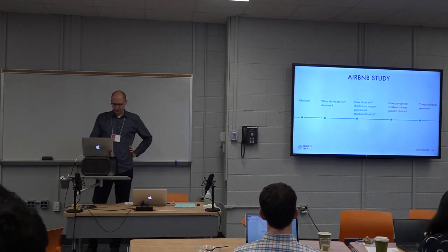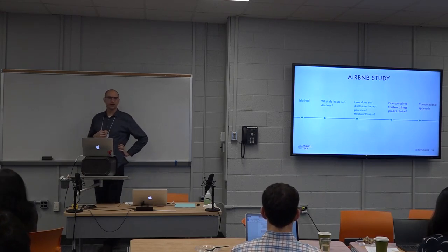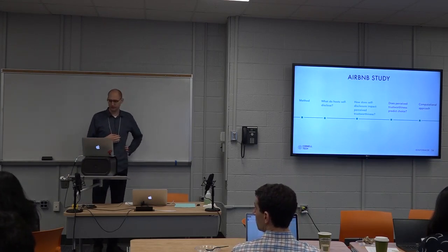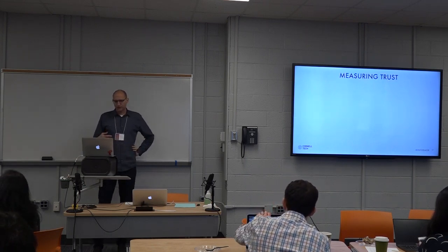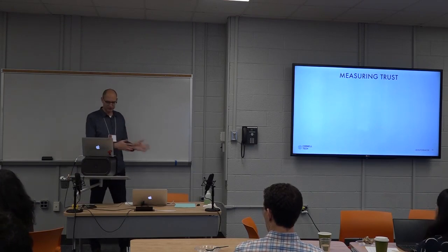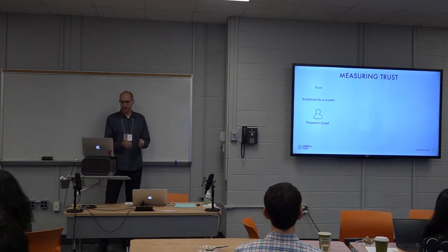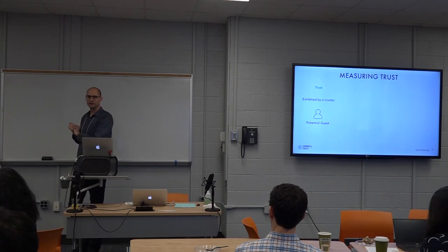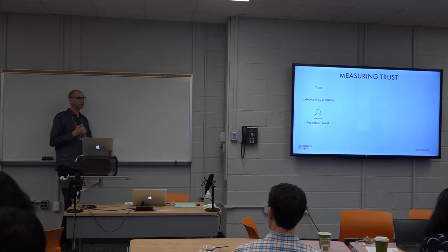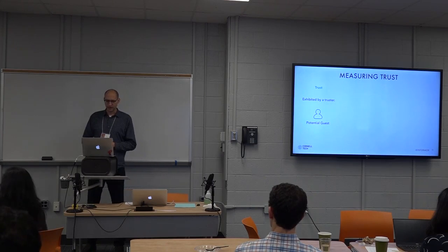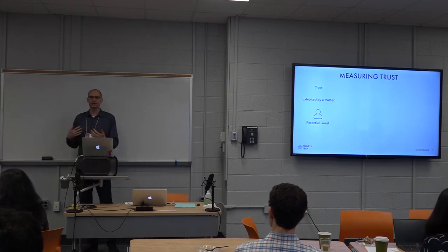Now we have a general idea of what hosts disclose — we proceed to see if there are consequences, whether those disclosures contribute to trustworthiness. To measure this, we go back to thinking about trust. We can't ask people to actually stay in an Airbnb, and even if we could, it would be hard to isolate trust from all other factors. So we distinguish between trust and trustworthiness — trustworthiness is an attributed quality of the trustee, the host.